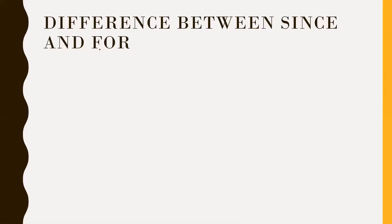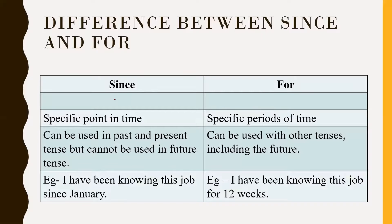Difference between 'since' and 'for'. 'Since' refers to a specific point in time, and 'for' refers to a specific period of time. 'Since' can be used in past and present tense but cannot be used in future tense. 'For' can be used with other tenses including the future. Example of 'since': 'I have been doing this job since January.' Example of 'for': 'I have been doing this job for 12 weeks.' Here it is telling the duration — a period of time.